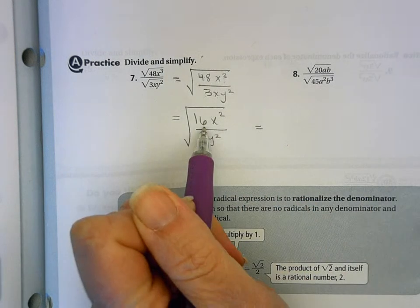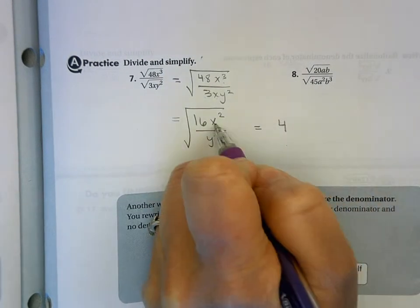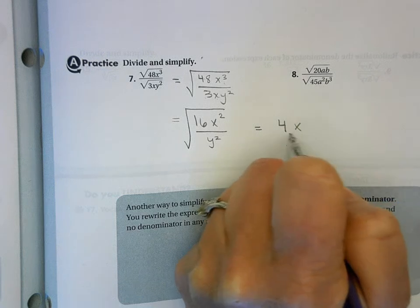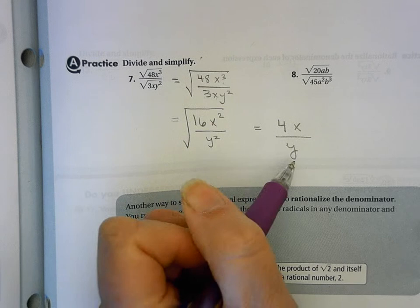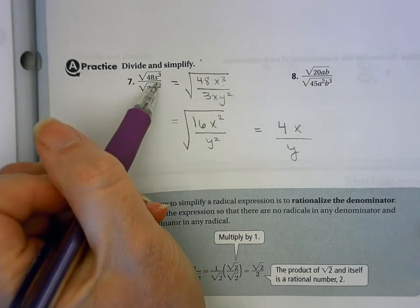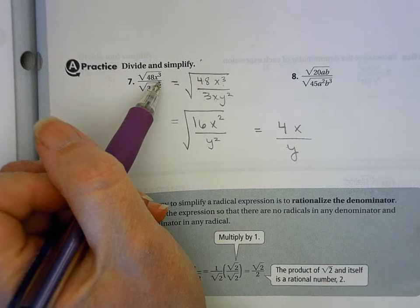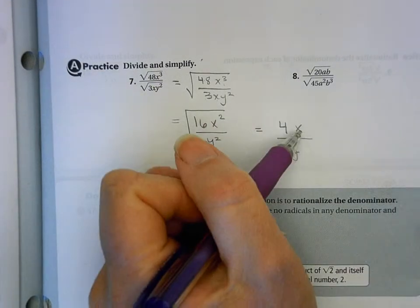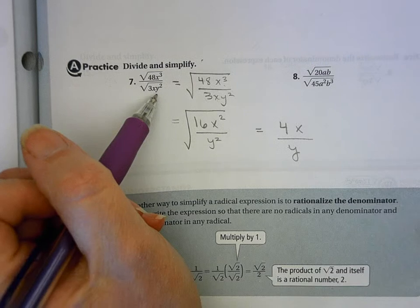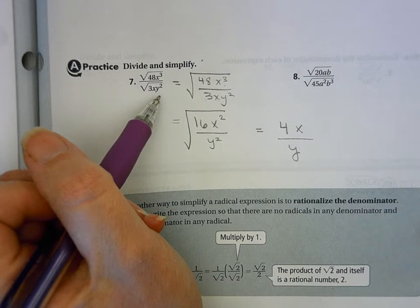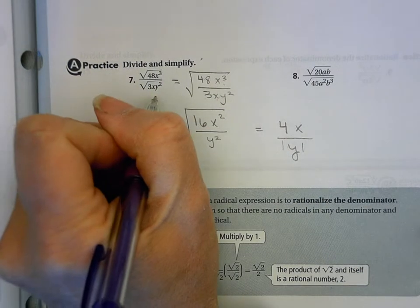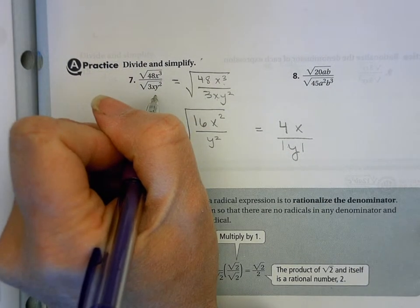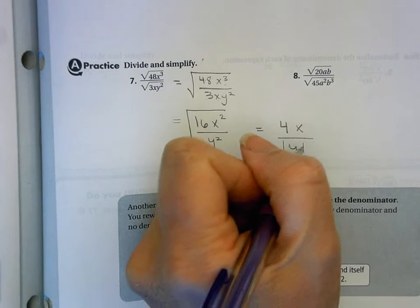The square root of 16 is 4. The square root of x squared is x. The square root of y squared is y. Going back, x was originally x cubed — that's an odd power, so x has to be positive, so I don't need absolute value around that x. The y squared was y squared to begin with, so y could be positive or negative, meaning I need absolute value around y. Since y was originally an even power, it needs to be absolute value.